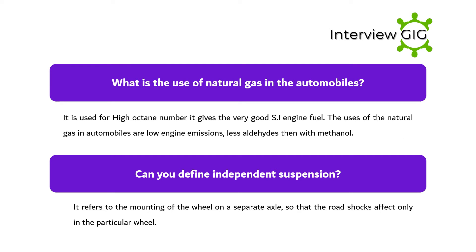What is the use of natural gas in automobiles? It is used for its high octane number, giving very good SI engine fuel. The uses of natural gas in automobiles include low engine emissions and less aldehydes than with methanol.